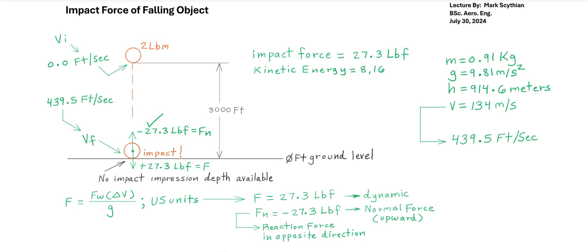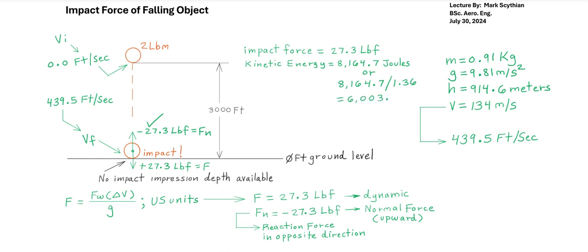Lastly, we have to consider this large amount of kinetic energy, 8164.7 joules. That's the potential energy equal to the kinetic energy. If we divide this value into 1.36, we then calculate 6,003.5 foot-pounds of kinetic energy.